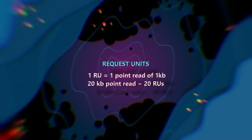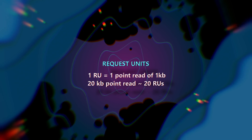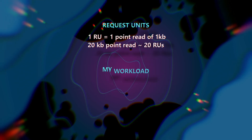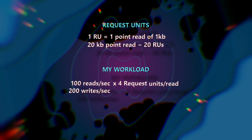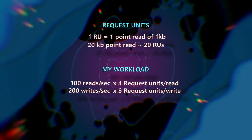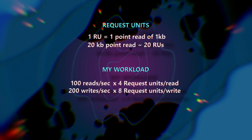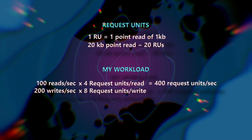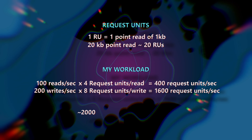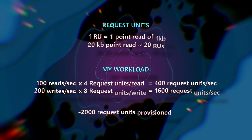RUs are Azure Cosmos DB's logical currency. For example, if I have a workload with 100 reads per second and 200 writes per second, and it takes 4 RUs per read and 8 RUs per write, then on the read path that's 400 request units per second, and on the write path that's 1,600 request units per second — putting our total capacity planning result at 2,000 request units per second. We also have a pricing calculator where you can input document size, number of reads, inserts, updates, writes, and deletes, with RU approximations for each operation already populated.